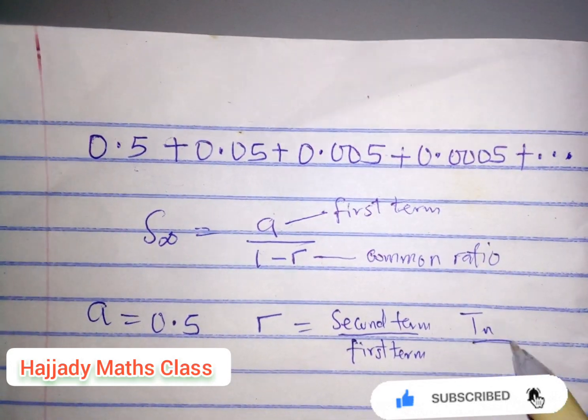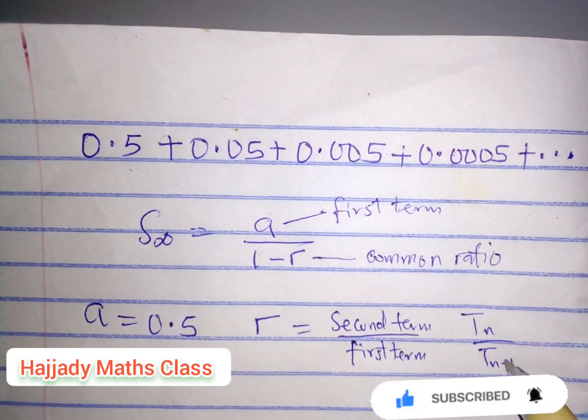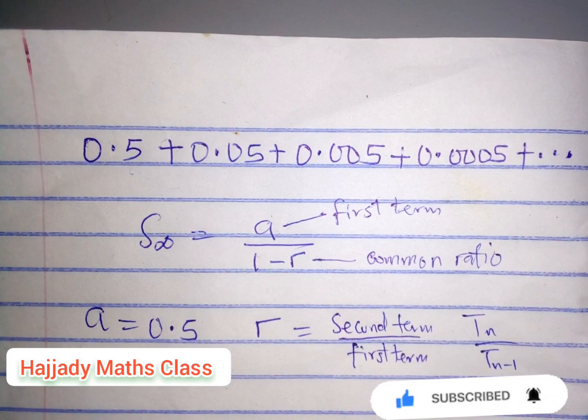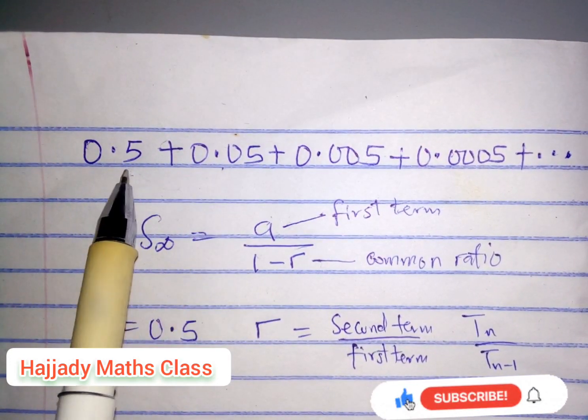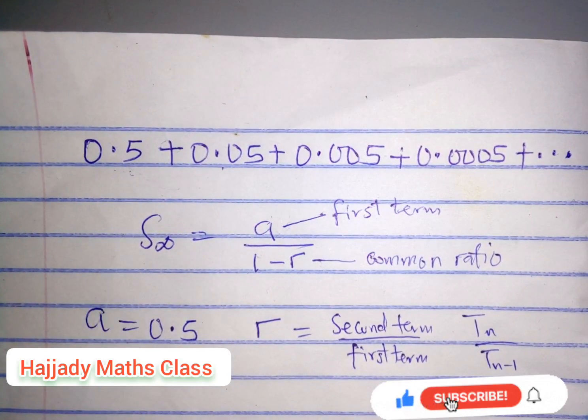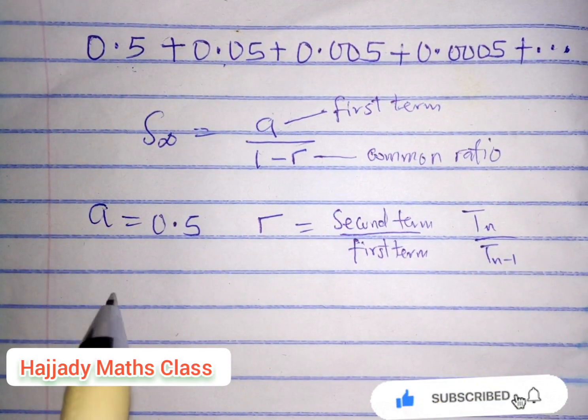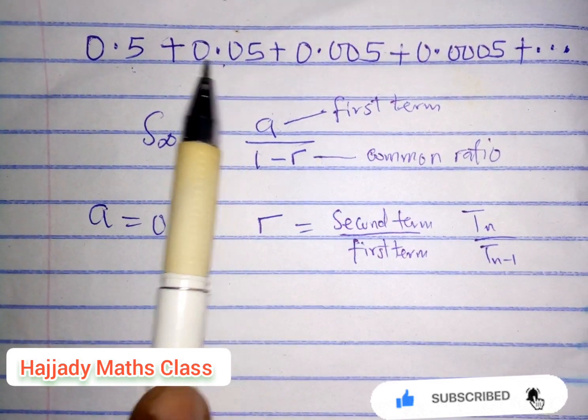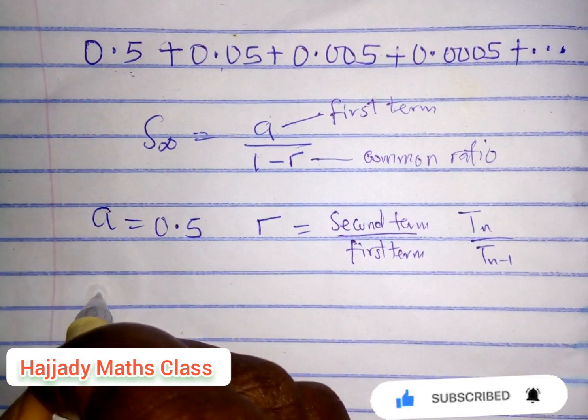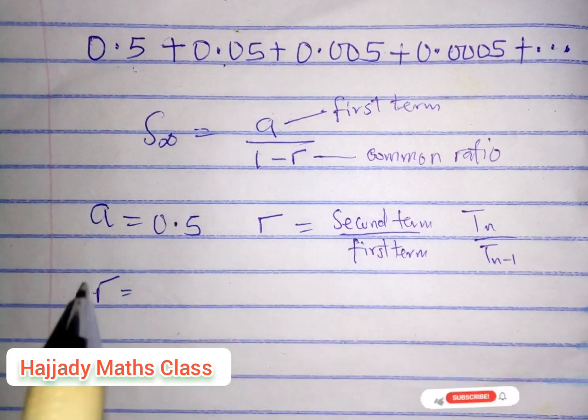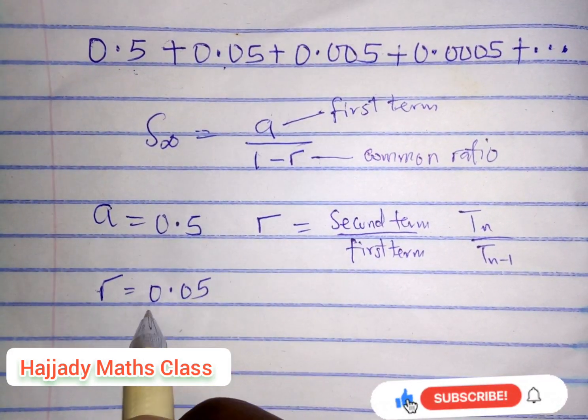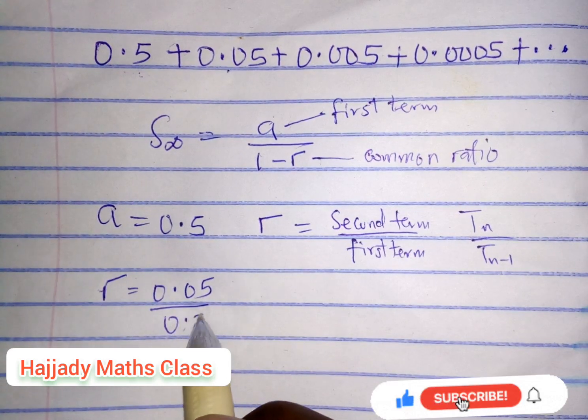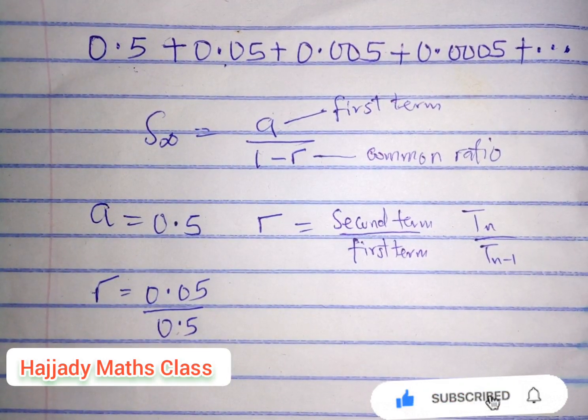So we can say this divided by this. Our second term divided by the first term gives us common ratio r equals 0.05 divided by 0.5. Dividing this without using a calculator, we are going to use